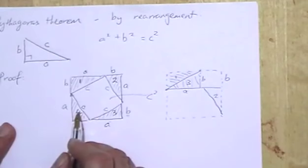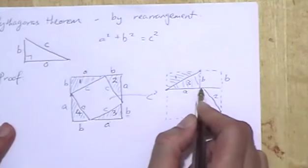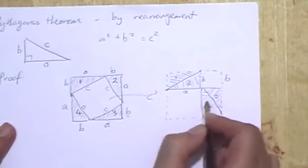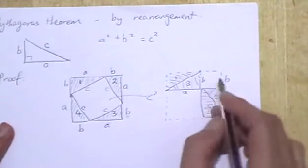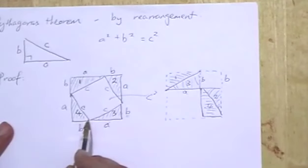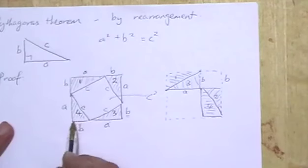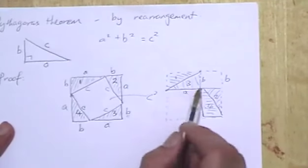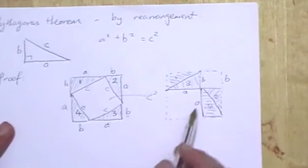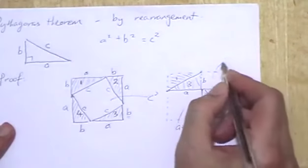Now I'm going to take triangle number 4 and move it to the right until this side meets with that side. This line would lie along the same straight line as B, because in moving this triangle to the other side, both corners would have moved by the distance A, which is the same as this side. So this side is now along the same line as side B. What we have now is two empty squares: this one has an area of A squared and that one has an area of B squared.